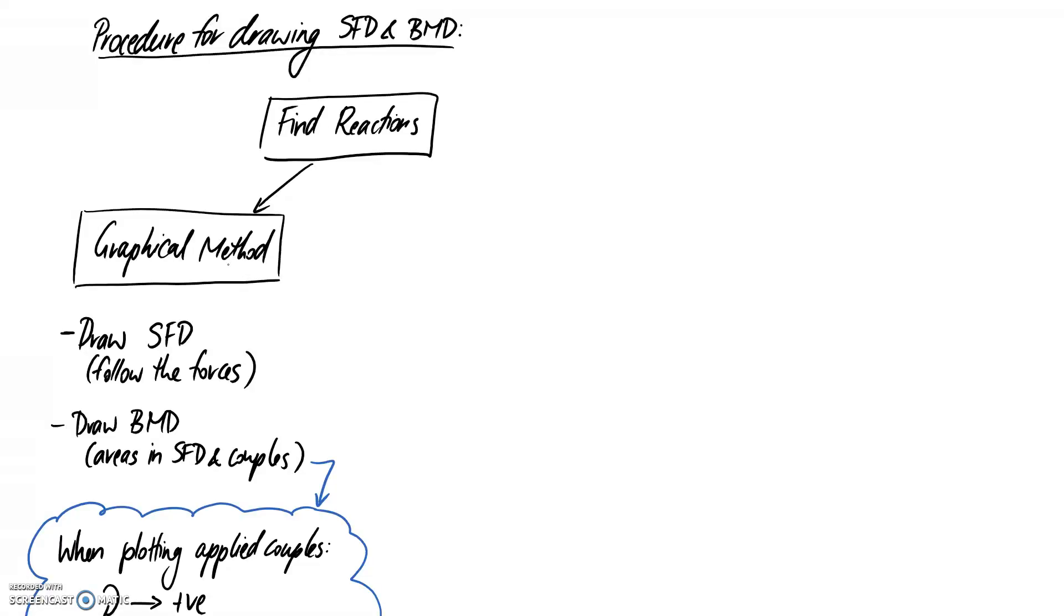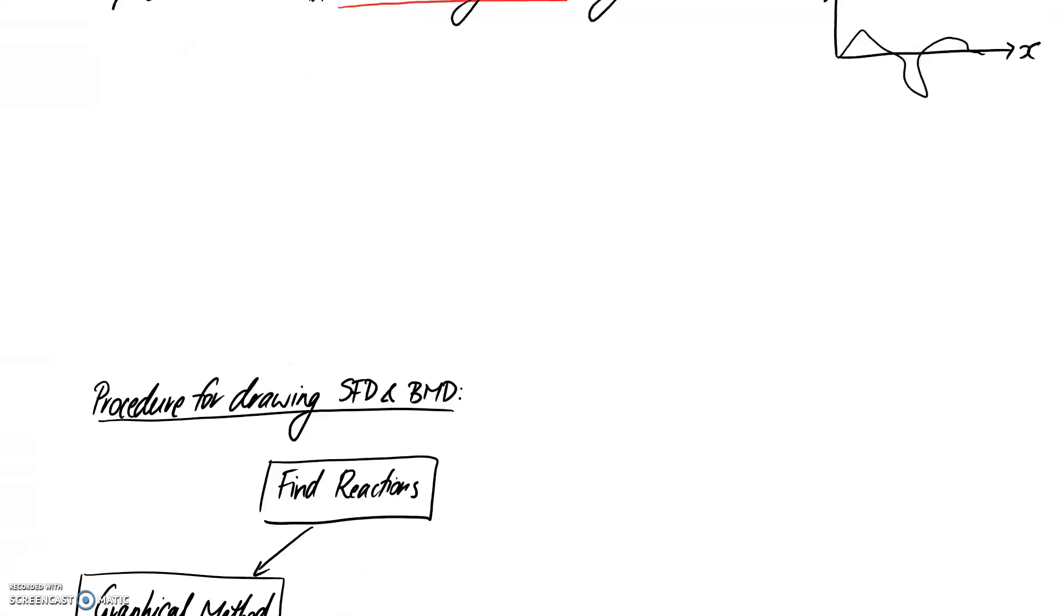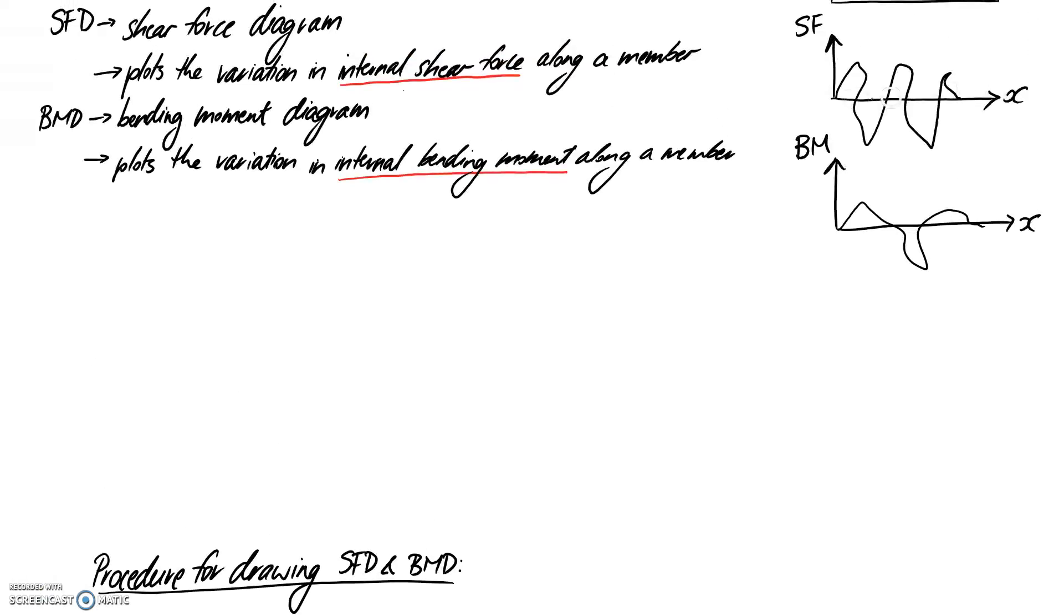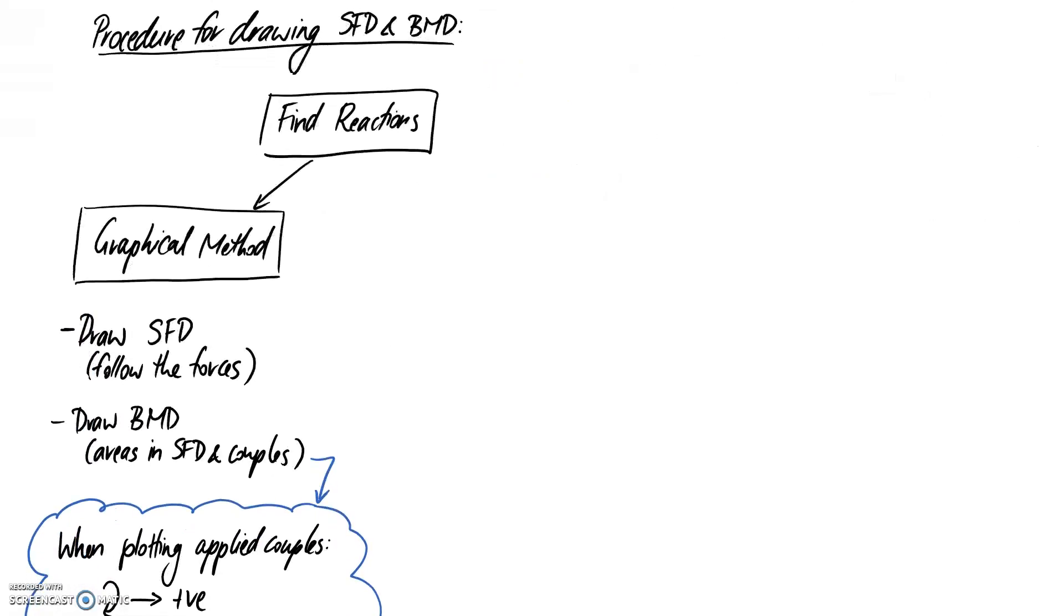The first thing you want to do with the graphical method is jump straight in and start drawing your shear force diagram. Set it up with the axes where along the x-axis you have how it varies along the length of the beam, and the y-axis is the shear force. For the graphical method, it's really just a case of following the forces up and down as you move across the beam.